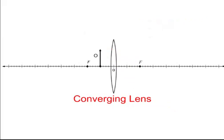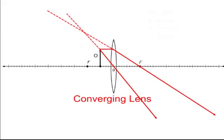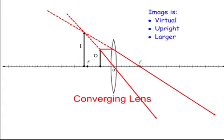For an object in front of the focal point of a converging lens, we draw one ray parallel that converges through the focal point and one through the origin. These don't meet up on the right-hand side, so we draw dotted lines, and the image meets up behind the object. This tells us the image is virtual — real images form where light rays converge, but the light rays don't meet here. The image is upright and larger.